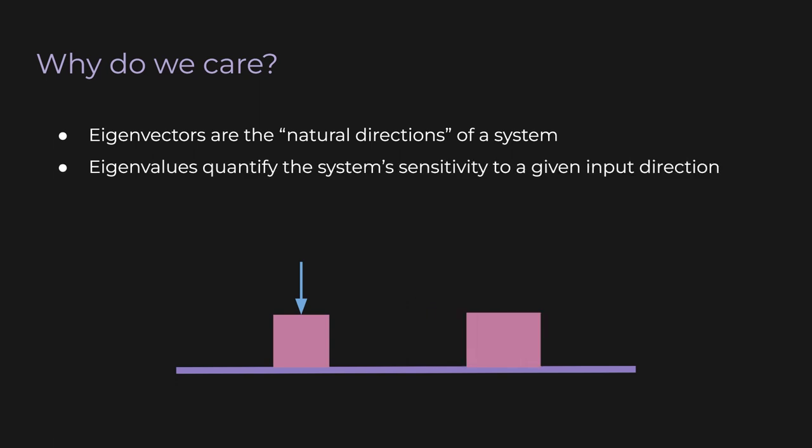Now imagine a third situation where we lay the cube on its side and apply force straight down and centered. We get the deformation to be an eigenvector again, but maybe the cube is more rigid along this direction, so the eigenvalue associated with this eigenvector is tiny. This means the cube will barely deform. So eigenvectors tell you how sensitive the system is to different input directions.